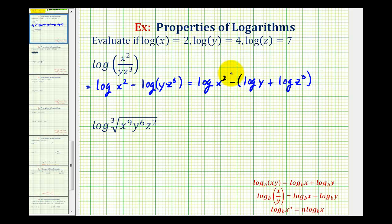Now we can distribute this minus, or we can think of distributing a negative one. Notice how we'll have minus log y minus log z to the third. So we'll have log x squared minus log y minus log z to the third.